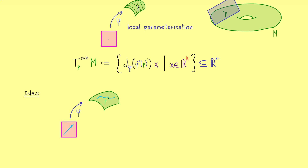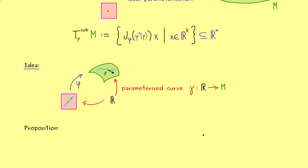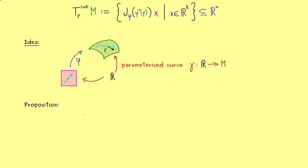We are interested in the derivative of this curve at the point p, and this should be a vector in R3 — more precisely in the tangent space. We start with one single variable, parameterize the line on the lower level, map it to the manifold, and obtain a parameterized curve on the manifold, which we call gamma. Then we don't need the parameterization phi anymore, because we can just calculate the derivative of gamma. This description can be generalized for abstract manifolds, because curves make sense there too.